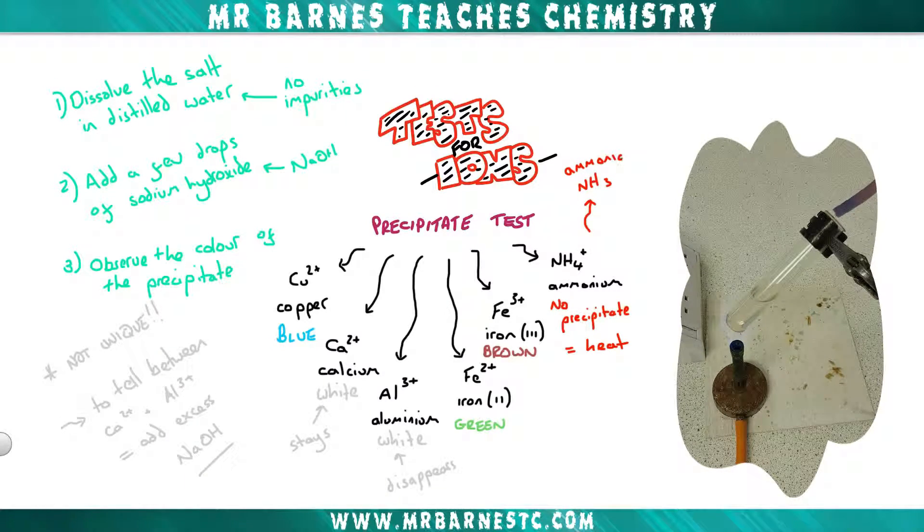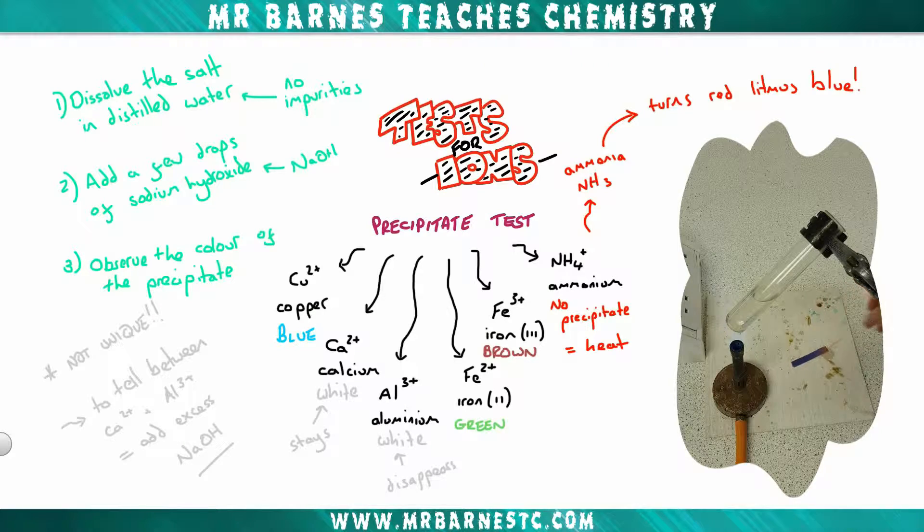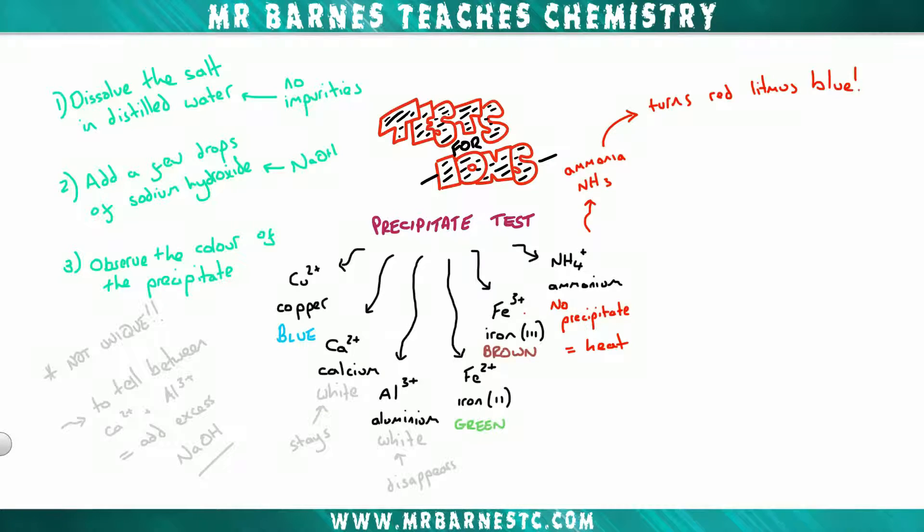That gas is ammonia, NH3, and that turns red litmus paper blue, as you can see here. And that is it for this video. So what you have to do is spend some time, look at each of the six different ions and learn the precipitate test for them.